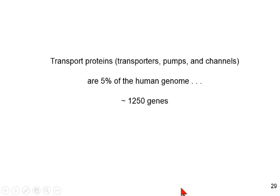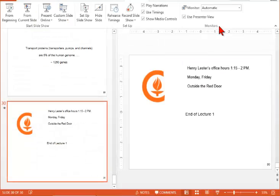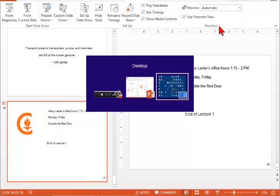How much of the genome is devoted to the proteins I talked about today? About 5%, around 1,250 genes. My office hours are today and Friday, Red Door, 1:15 to 2 p.m. We'll see you on Wednesday.